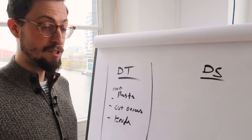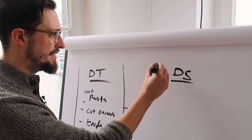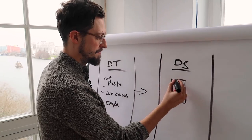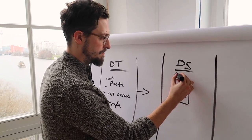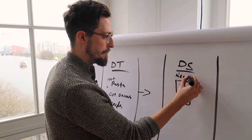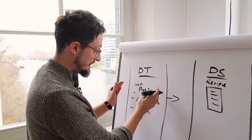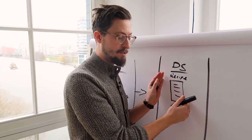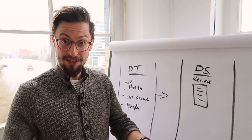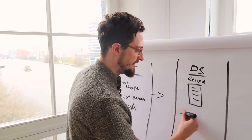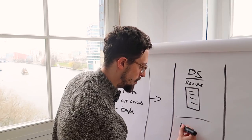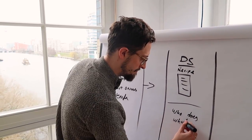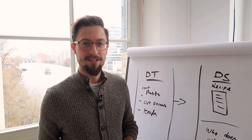And that's where something like the design sprint comes in. The design sprint is really simple — it's a recipe. Here's how you make the thing. Based on these tools, based on these ingredients, here's a recipe for executing something like a truffle pasta. And it's also a really clear list of who does what.